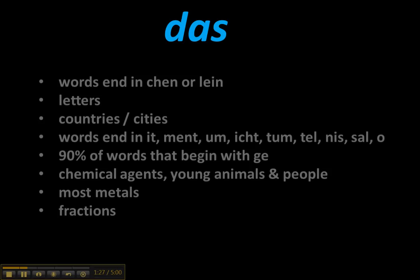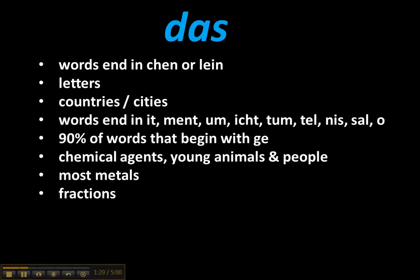For 'das' words: words ending in -chen or -lein are neuter, as are letters, most countries with some exceptions, and cities. Words ending in -it, -ment, -um, -ich, -tum, -tel, -nis, or -sal are neuter. 90% of words beginning with GE- will be das words. Chemical agents, young animals and people — for example das Baby — and most metals and fractions are also neuter.